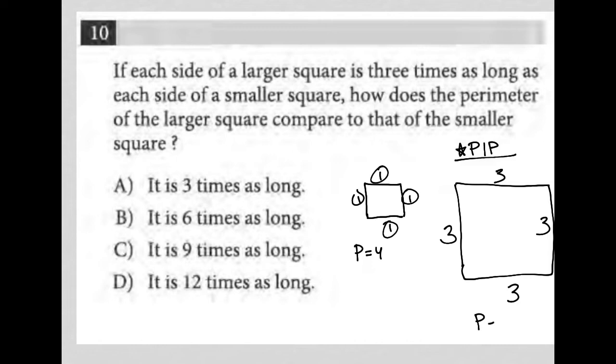Whereas a perimeter here would be 12. We just add up all these guys or even say multiply three times four. There's four sides. So the perimeter here would be 12.